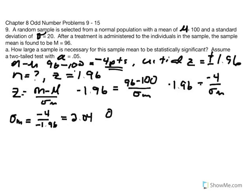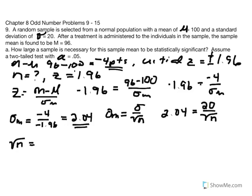Now what we want to do is find out what size of n is needed to generate this standard error. Using the standard error equation and replacing variables: 2.04 equals the standard deviation of the population, which was given as 20, over the square root of n. Rearranging, the square root of n equals 20 over 2.04. That gives us the square root of n equal to 9.804.